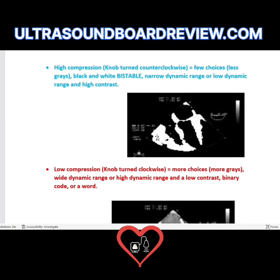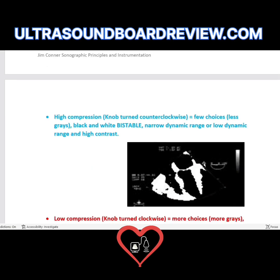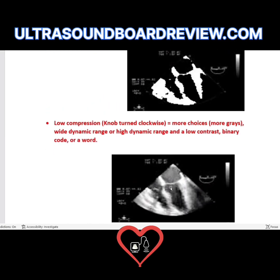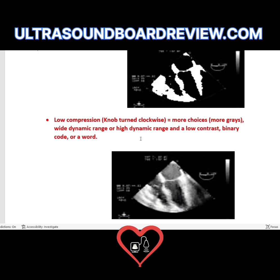The dynamic range evaluates your grayscale. The way you adjust your dynamic range is with your compression. When you turn up your compression, you're turning the knob counterclockwise, making the compression number go down — this results in fewer shades of gray and a more black-and-white image. That means you have a narrow or low dynamic range and high contrast. If you want more shades of gray, you turn the knob clockwise, which lowers your compression, making more shades of gray — this gives a wider or high dynamic range with low contrast.